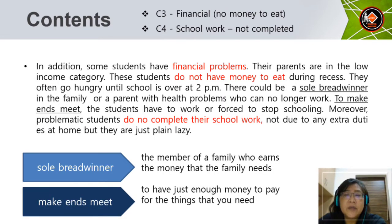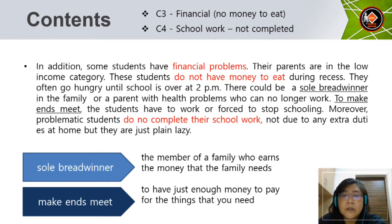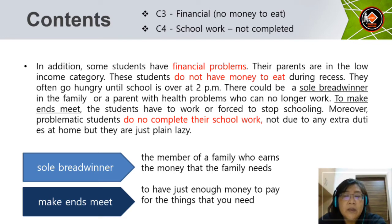For Content 3 — financial, no money to eat — and Content 4 — school work not completed — you can write: 'In addition, some students have financial problems. Their parents are in the low income category. These students do not have money to eat during recess and often go hungry until school is over at 2pm. There could be a sole breadwinner in the family, or a parent who can no longer work. Moreover, problematic students do not complete their school work — not due to extra duties at home, but they are just plain lazy.' Sole breadwinner means the family member who earns the money the family needs. Make ends meet means to have just enough money to pay for necessities.